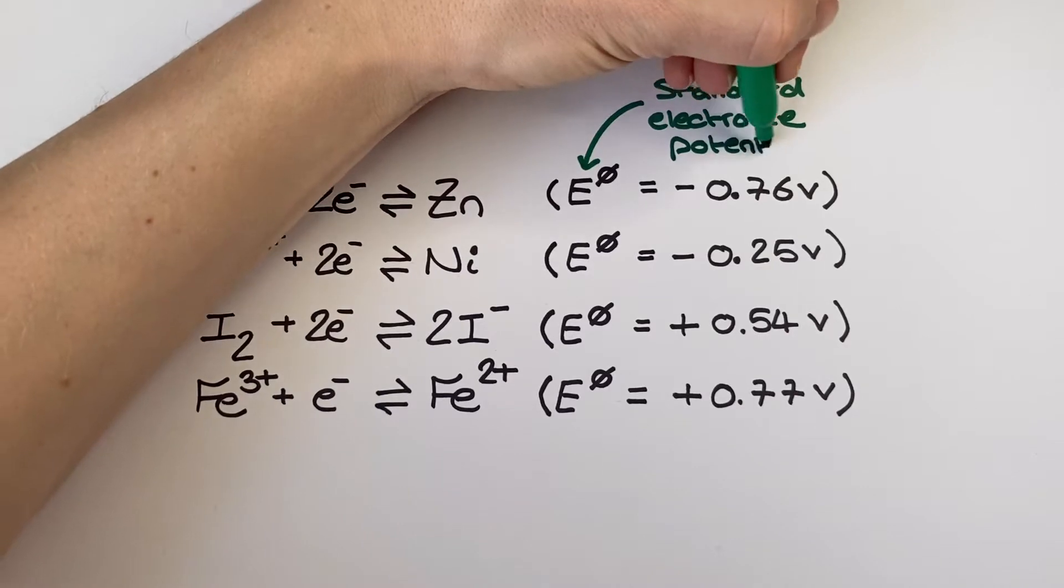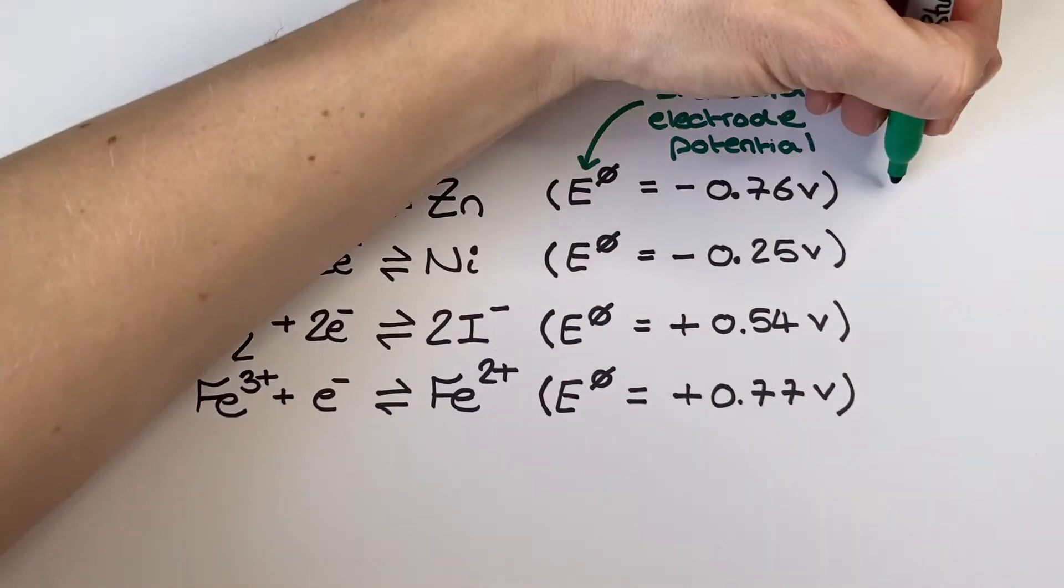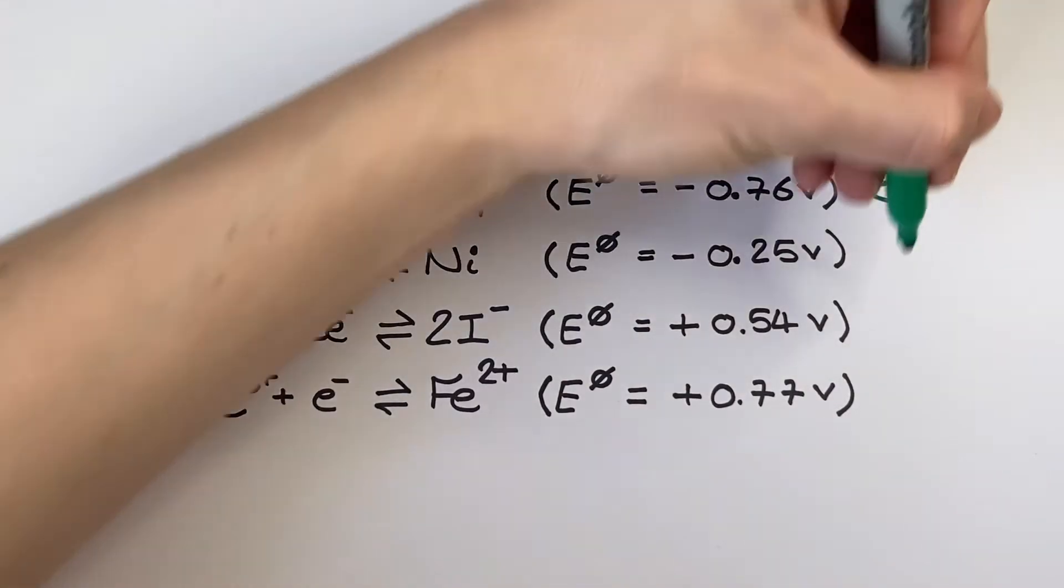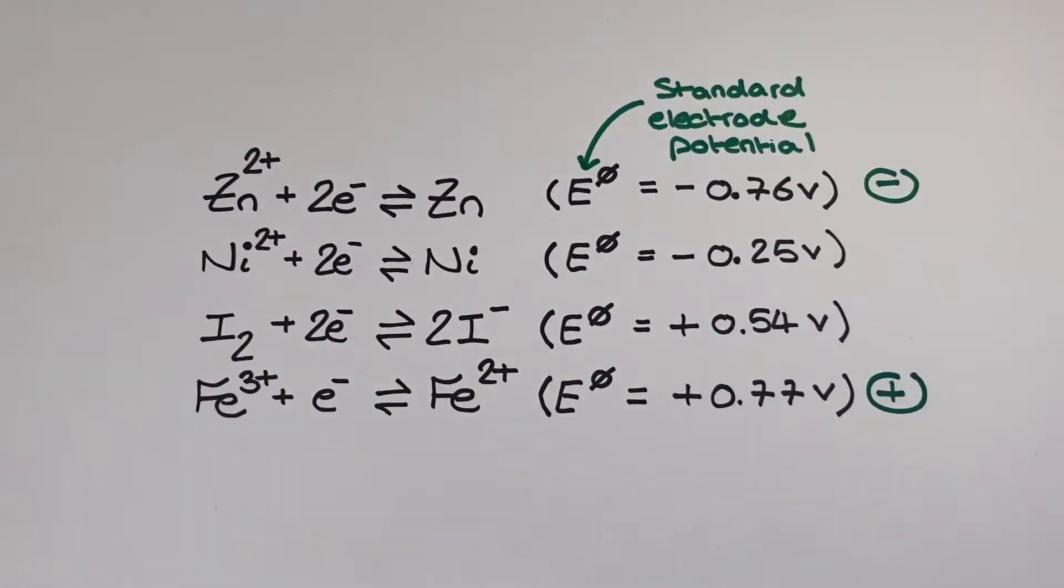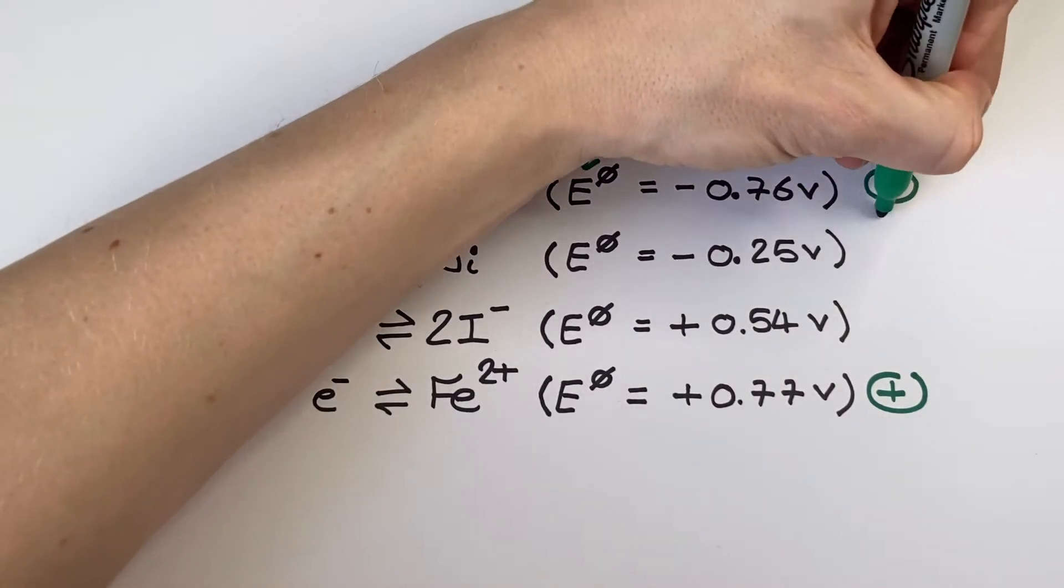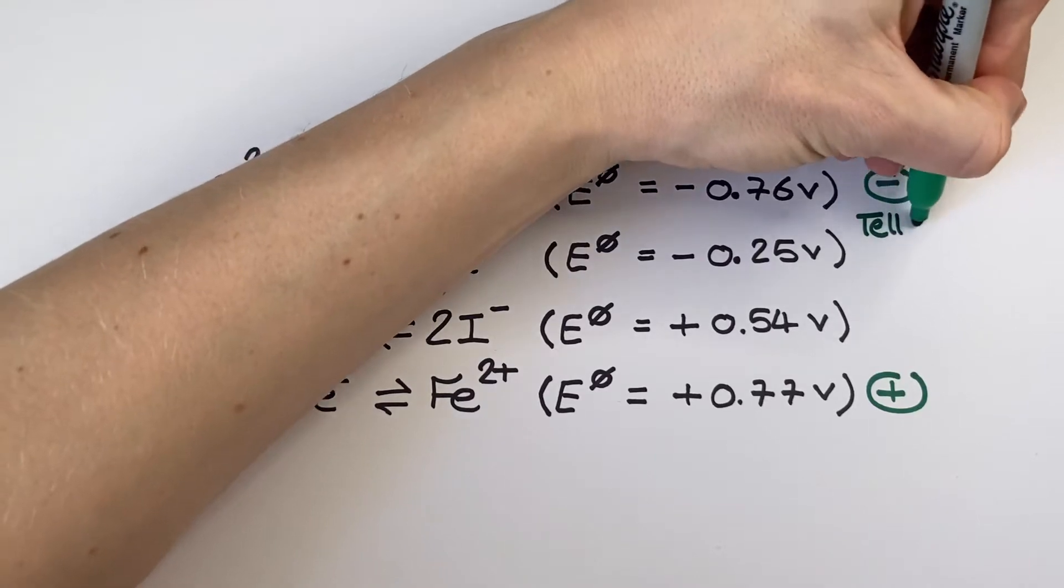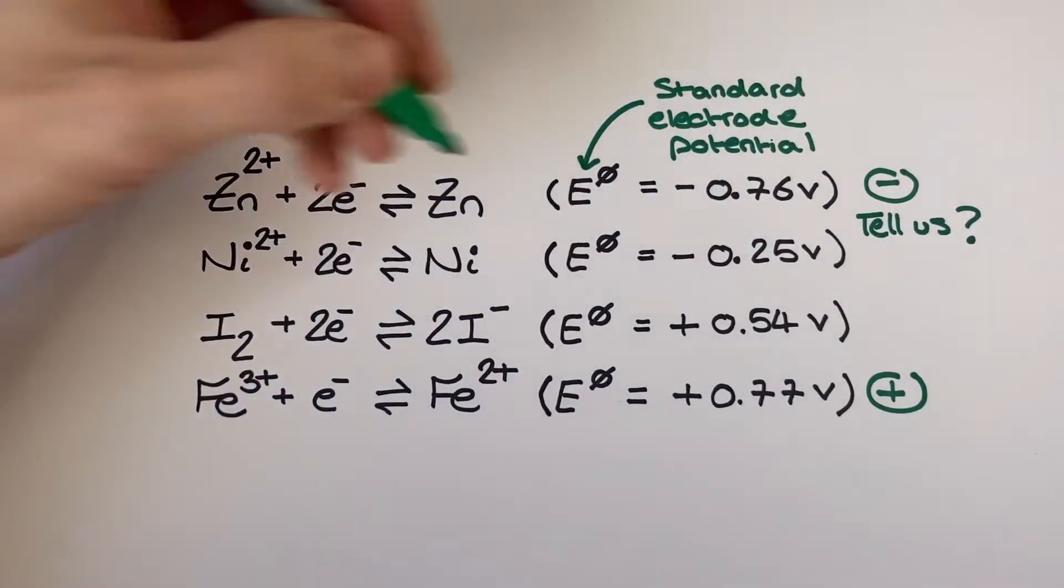Next to each half equation I have a list of their standard electrode potentials which is defined as the electromotive force or the voltage measured when a half cell is connected to the standard hydrogen electrode or the standard hydrogen half cell. For standard conditions this must be at 298 kelvin, 100 kilopascals, and all solution concentrations must be one mole per decimetre cubed.